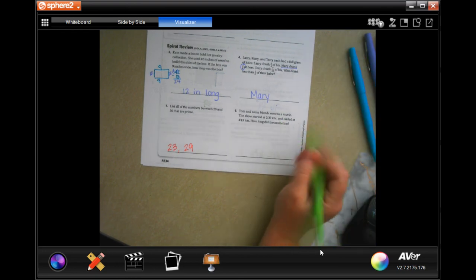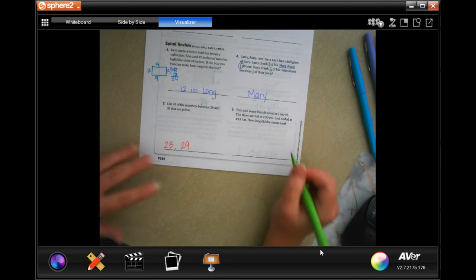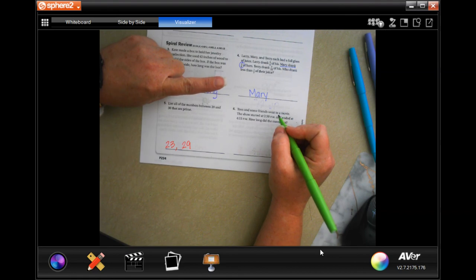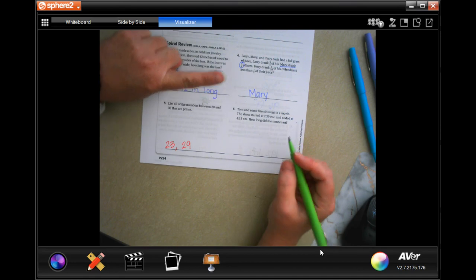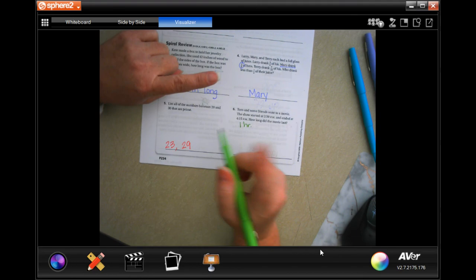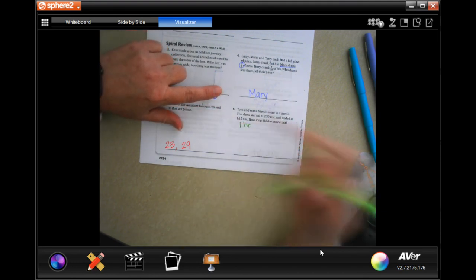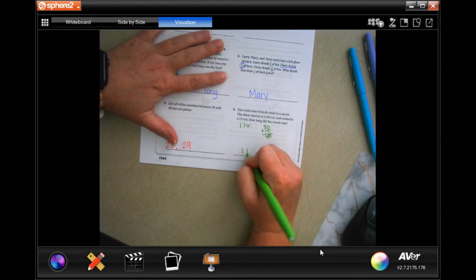Con and some friends went to a movie. The show started at 2:30 and it ended at 4:15. How long did the movie last? Well, from 2:30 to 3:30 is one hour. And from 3:30 to 4:30 would be another hour. But that's not all the way there. So, we know we have one hour. That's at 3:30. From 3:30 to 4 is a half an hour plus 15 minutes. So, you have 30 plus 15, that's 45. So, 1 hour, 45 minutes.